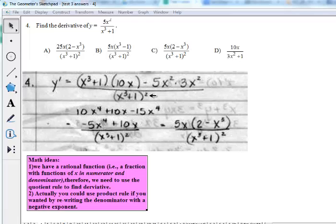Another way to think of that is low on the bottom, d high, which is 10x, minus high, d low, divided by the bottom squared.